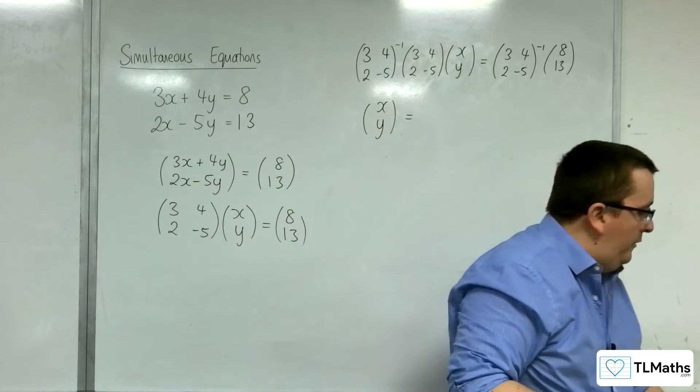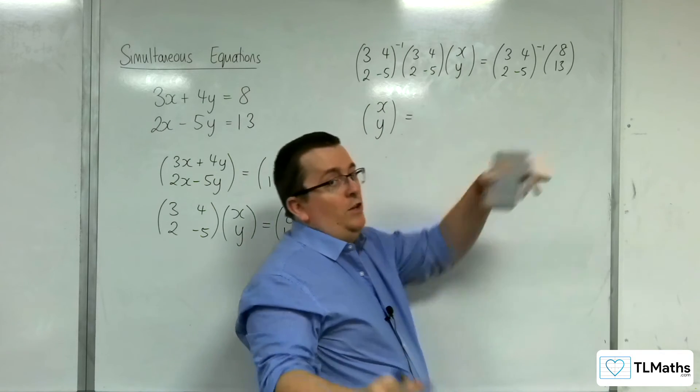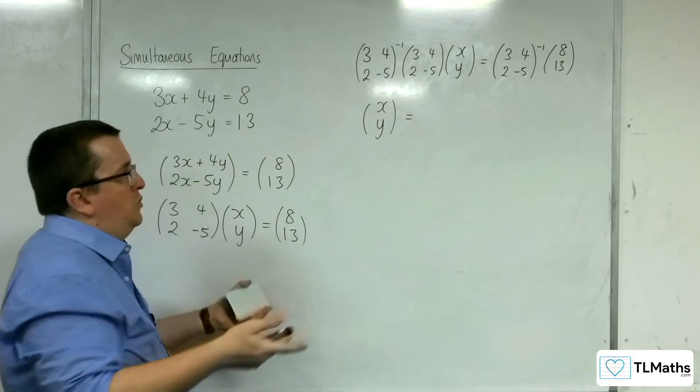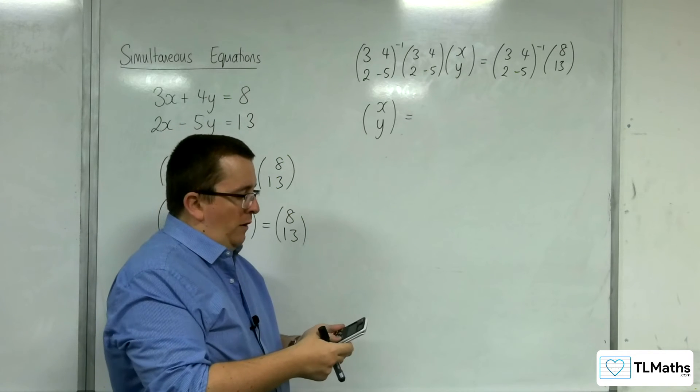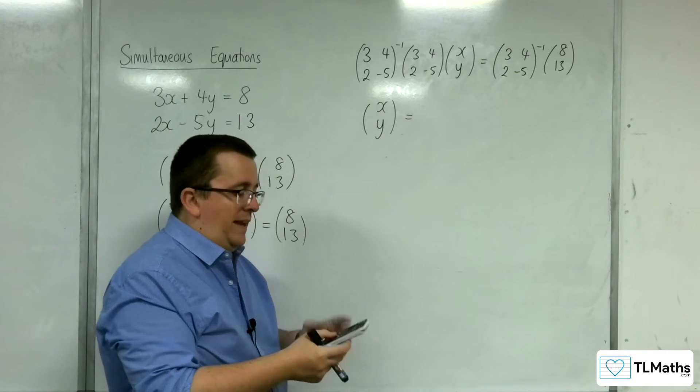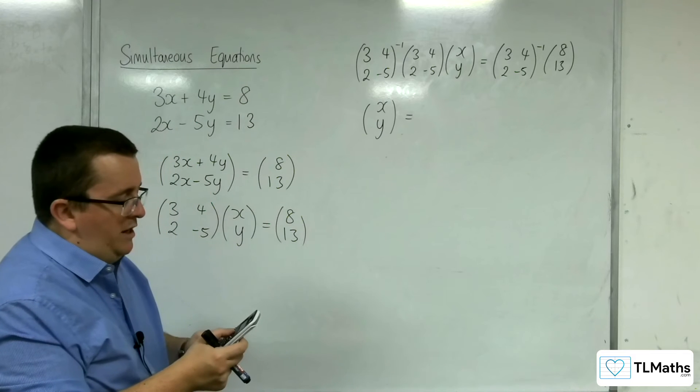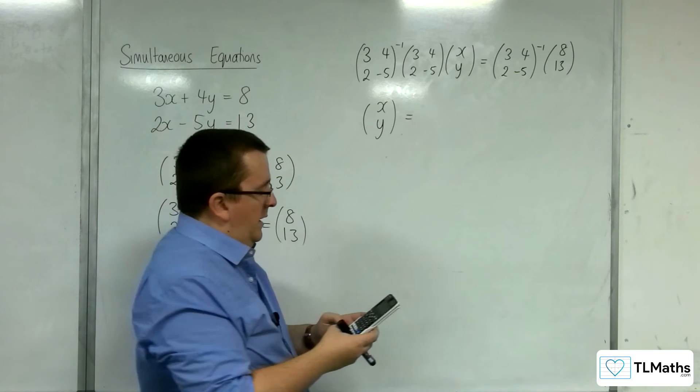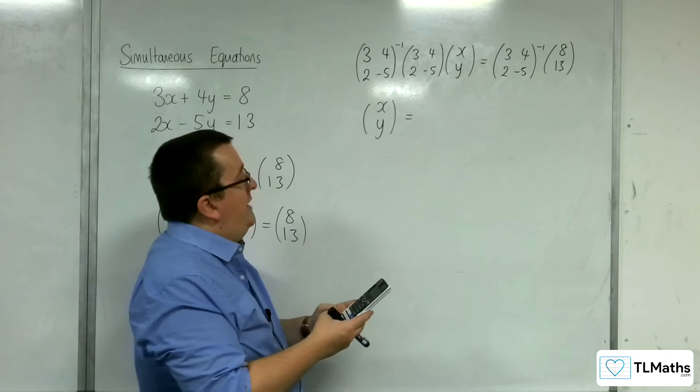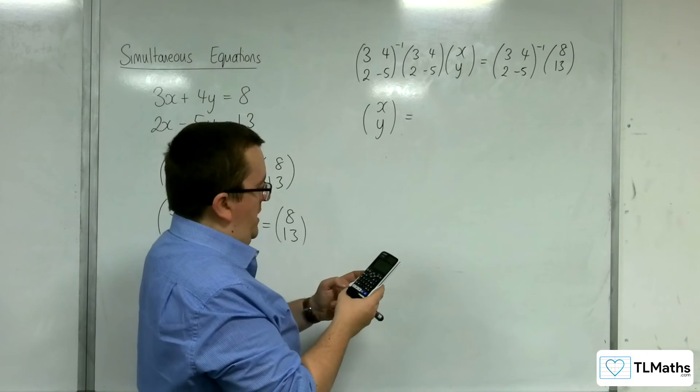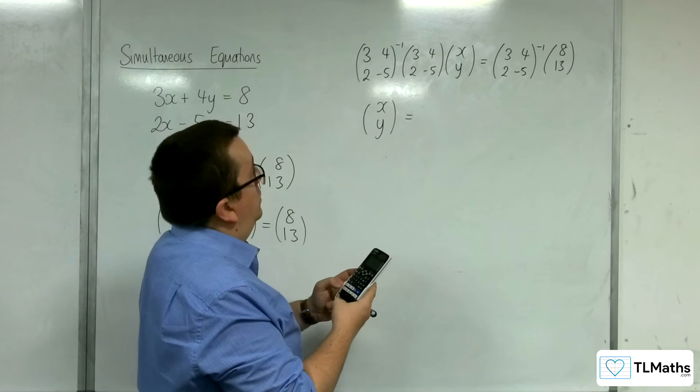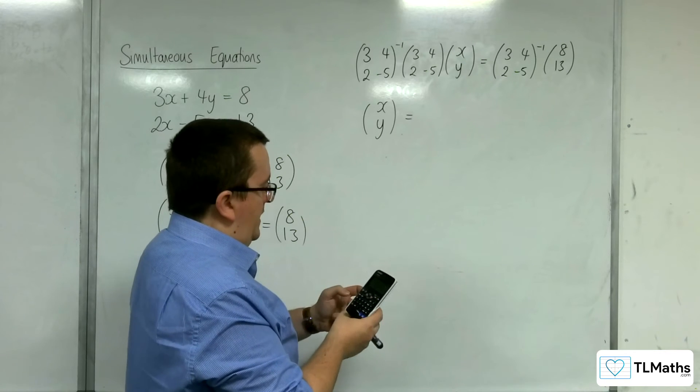Now, we can use our calculator to find the inverse matrix. Now, you could do this by hand, but good practice at this point to do it on our calculator as well. Right, so on the Casio ClassWiz, we're going to go to menu and then number 4. We're going to define matrix A, number 1. Two rows, two columns. So 3, 4, 2, and negative 5.